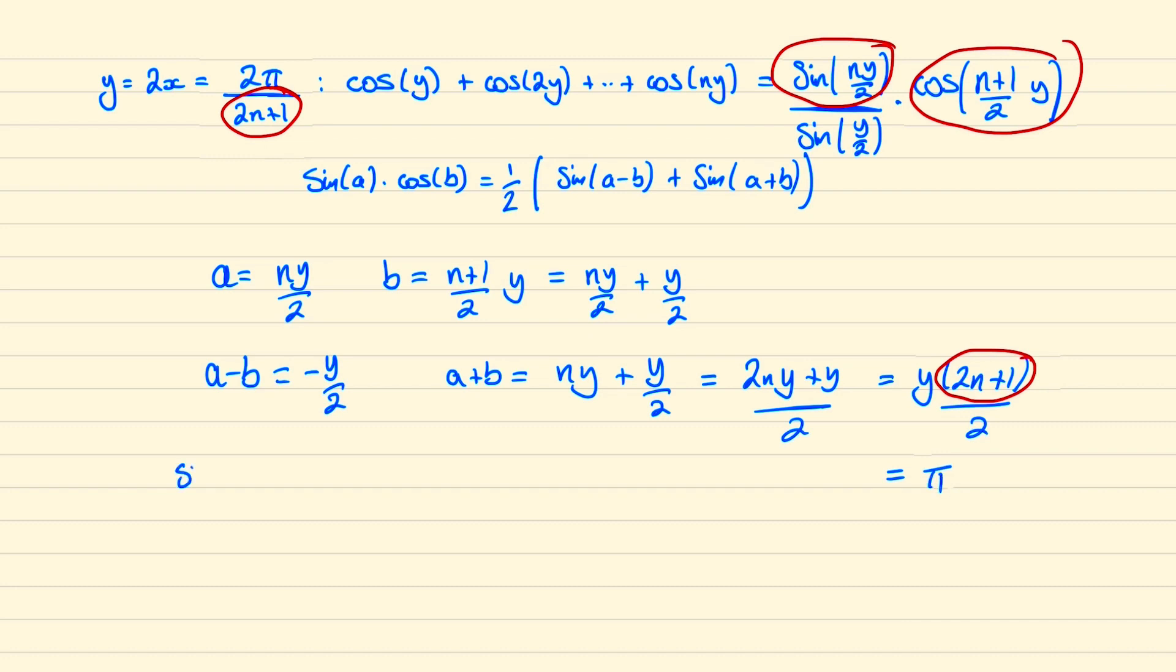And so we have sine ny over 2 times cos n plus 1 over 2y is equal to a half of sine negative y over 2 plus sine π. We already know that sine π just evaluates to zero. Hence our sum cos y cos 2y up to cos ny is just all of this divided by sine y over 2, and sine of negative y over 2 is the same as negative sine of y over 2, so these terms cancel out to leave just a minus half overall.